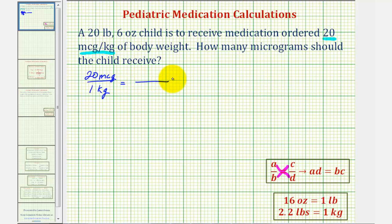The second rate would deal with the given weight of the child. Since kilograms is weight, the 20 pounds, six ounces must go on the bottom. The numerator would be the number of micrograms, which is unknown, so we'll say X micrograms.